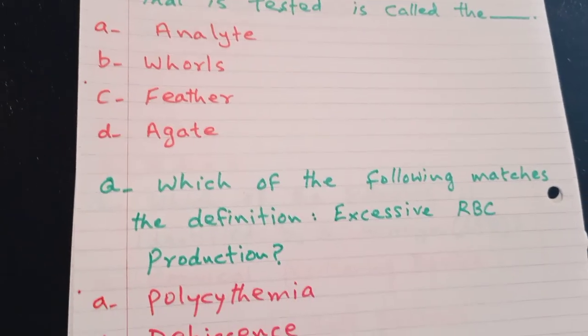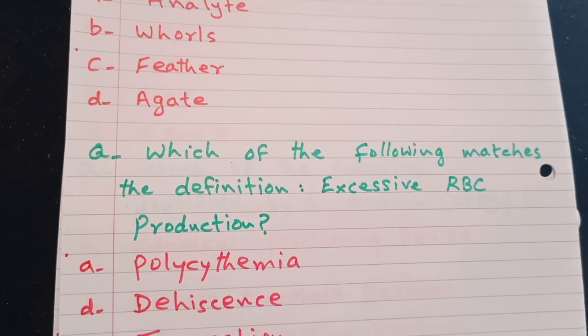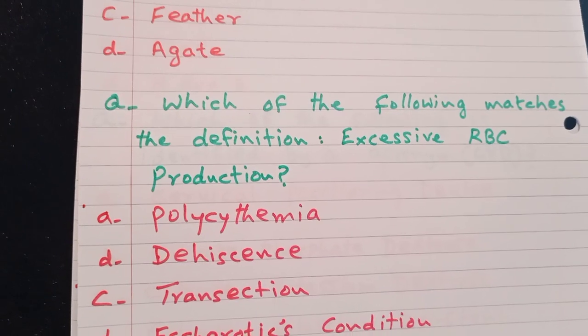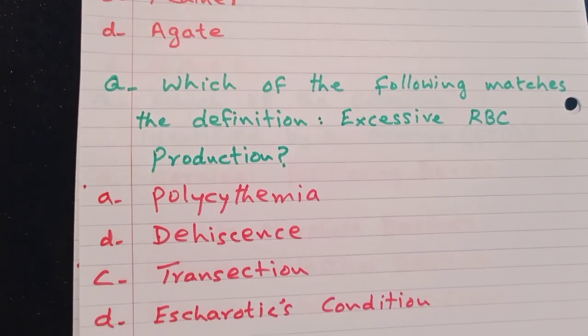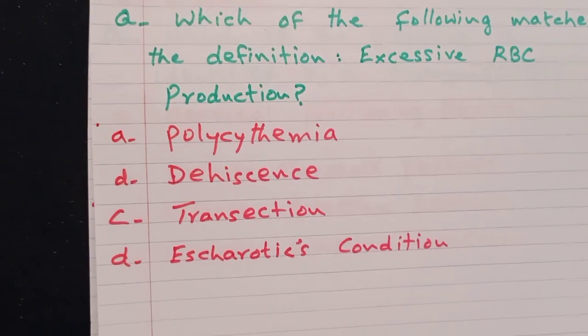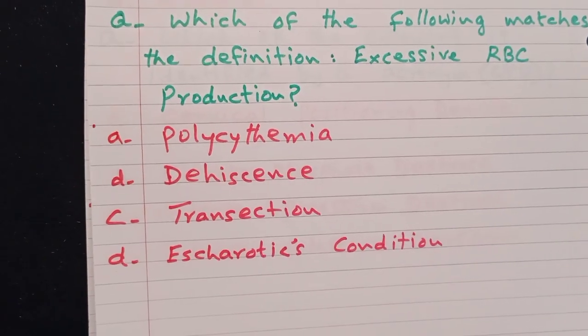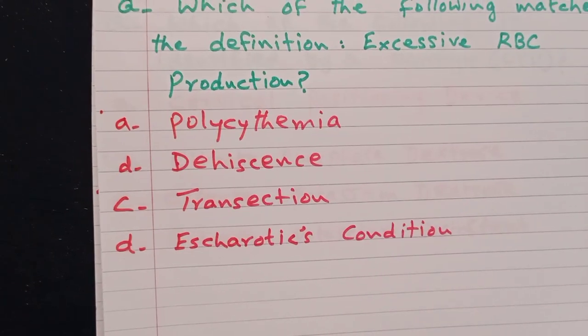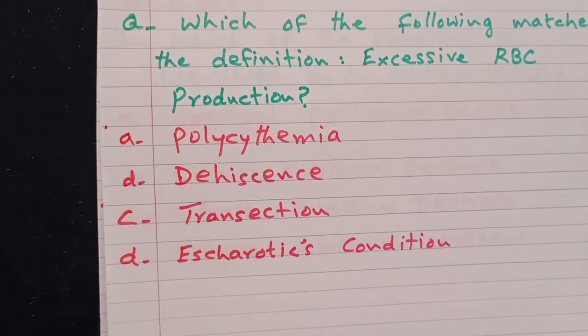Which of the following matches the definition excessive RBC production? Polycythemia, dehiscence, transaction, sclerotic condition. The answer is A, polycythemia.